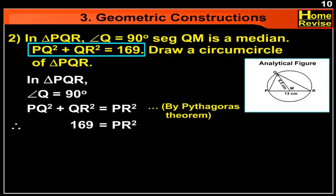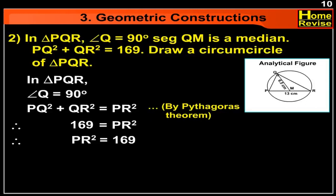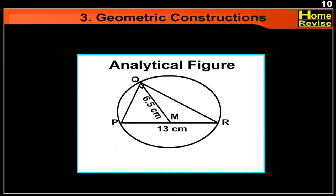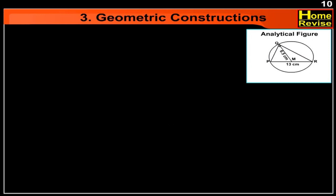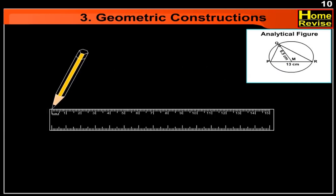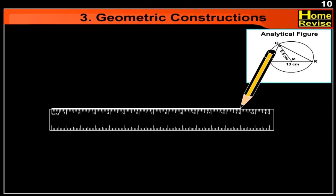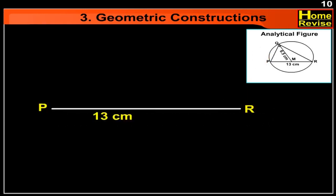Therefore, PR² is equal to 169. Taking square roots on both sides, PR is equal to 13 cm. Let us draw the analytical figure. The base of triangle PQR will be PR of length 13 cm. Now let us construct triangle PQR. First, let us draw the base PR of length 13 cm.